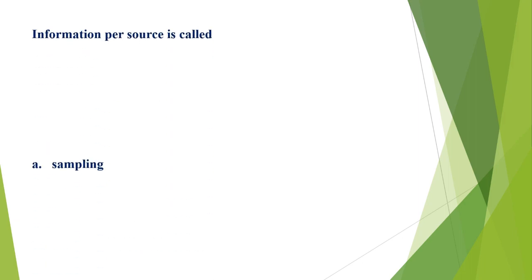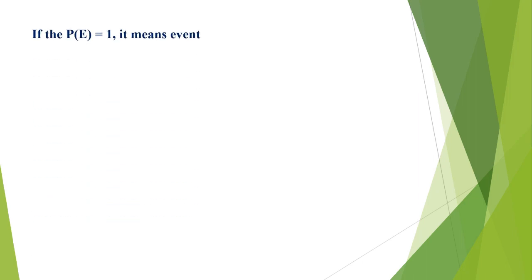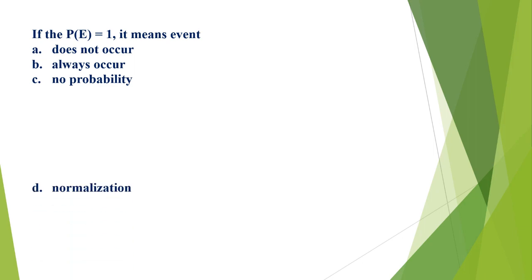Information per source is called: A) sampling, B) quantization, C) entropy, D) normalization. The correct option is C, entropy. If P = 1 and the probability is one, it means the event: A) doesn't occur, B) always occurs, C) no probability, D) normalization. The correct option is B, always occurs — if the probability is 1, the event has always occurred.